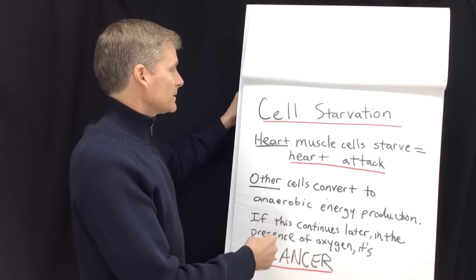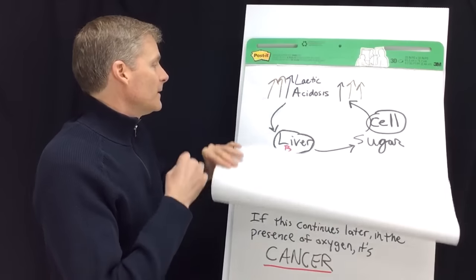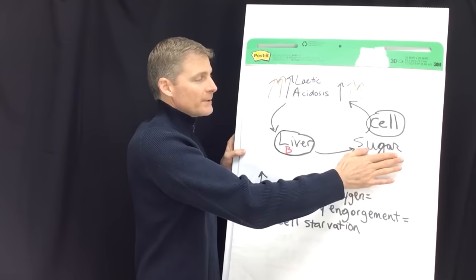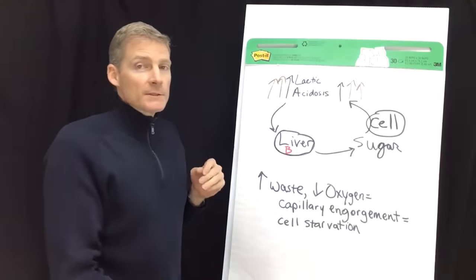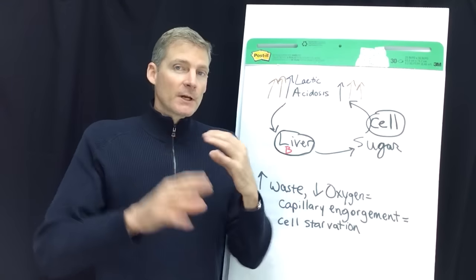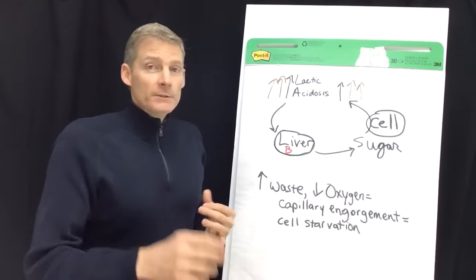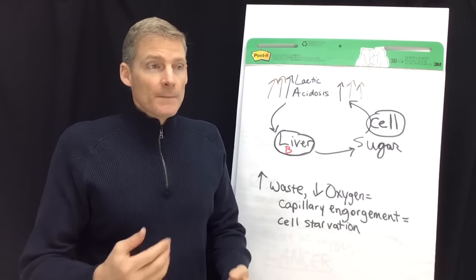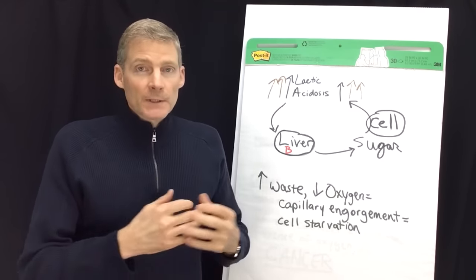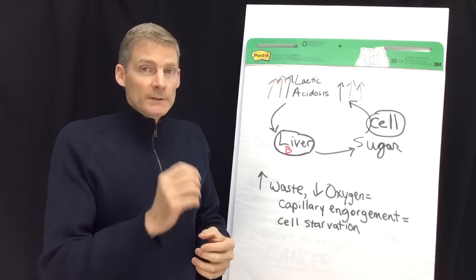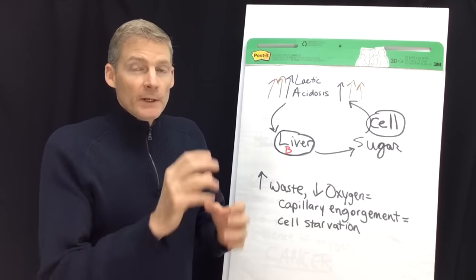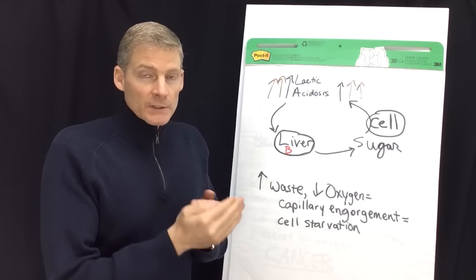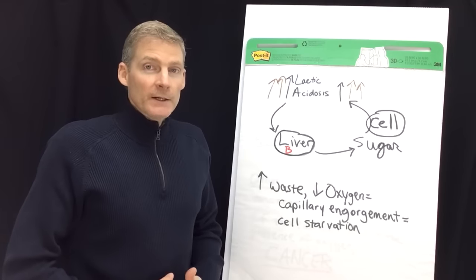Now there are other things in the body besides excessive carbohydrate metabolism that causes waste products to go up relative to oxygen causing this whole scenario. You could have mold, heavy metals in your body, chemicals in your body. And then you could even have what's called a subluxation, and that's where you have a joint like in your spine, for example, that's misplaced and it's decreasing the amount of circulation in that area.